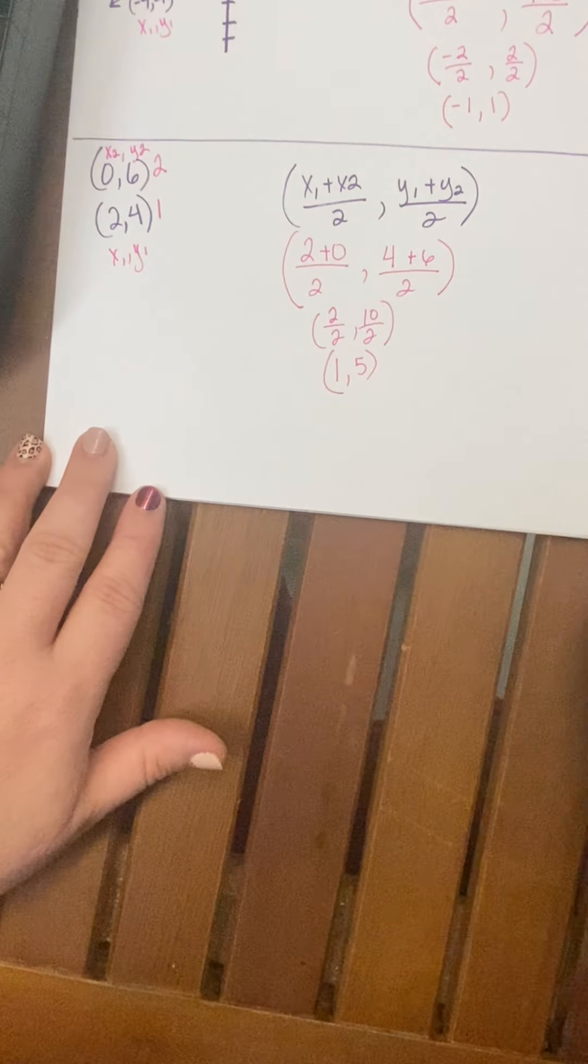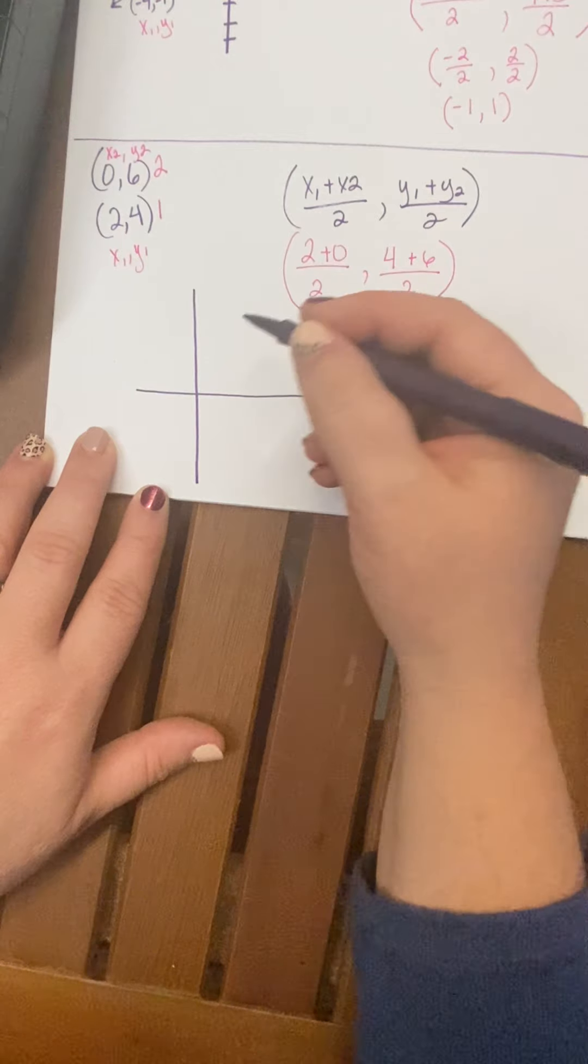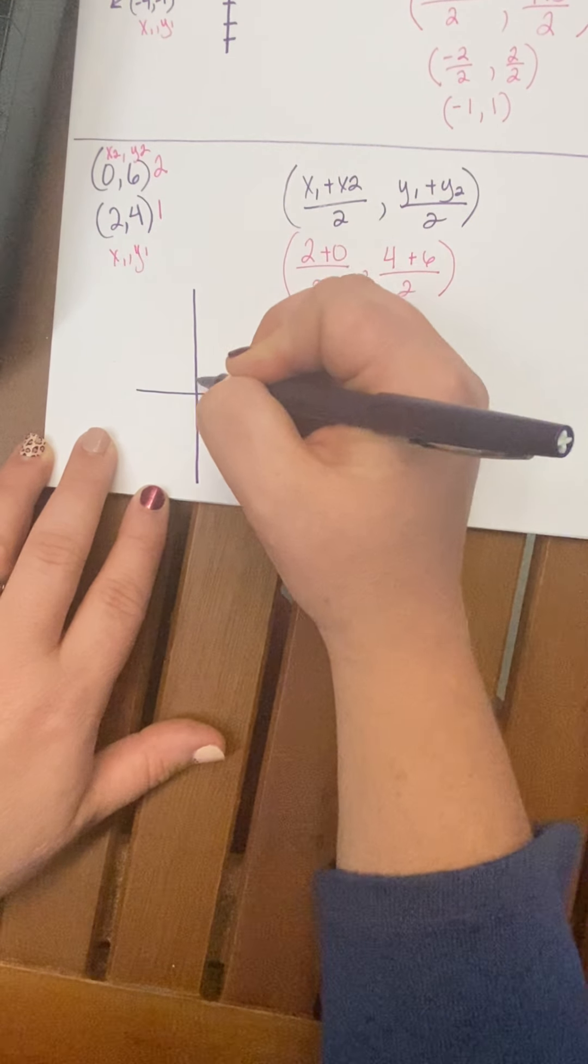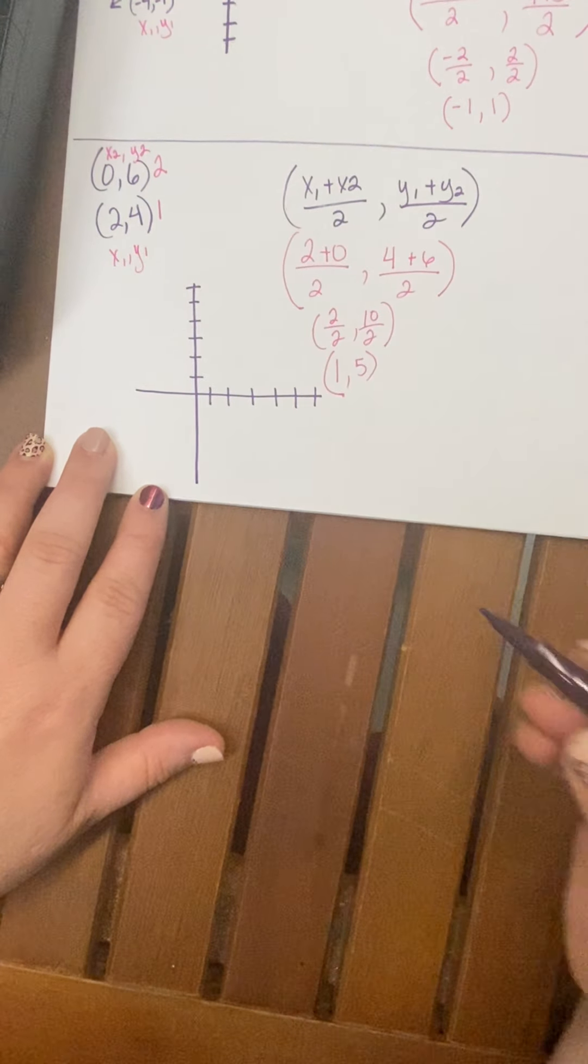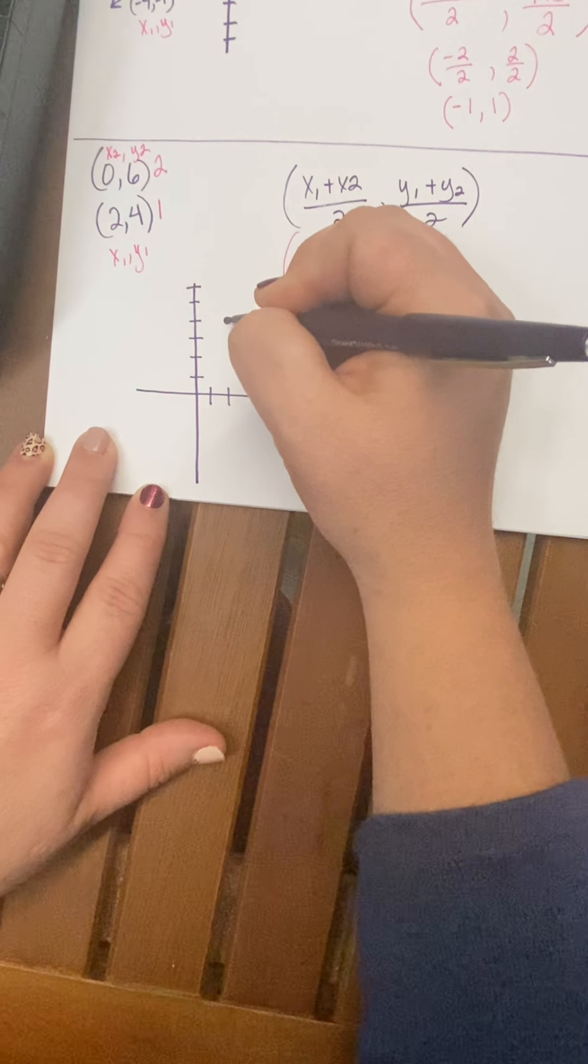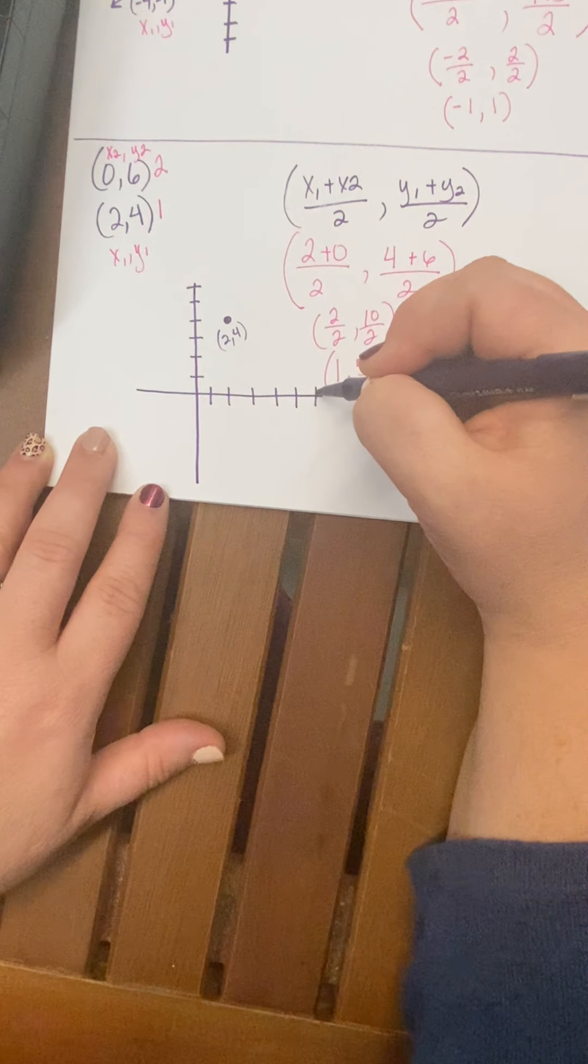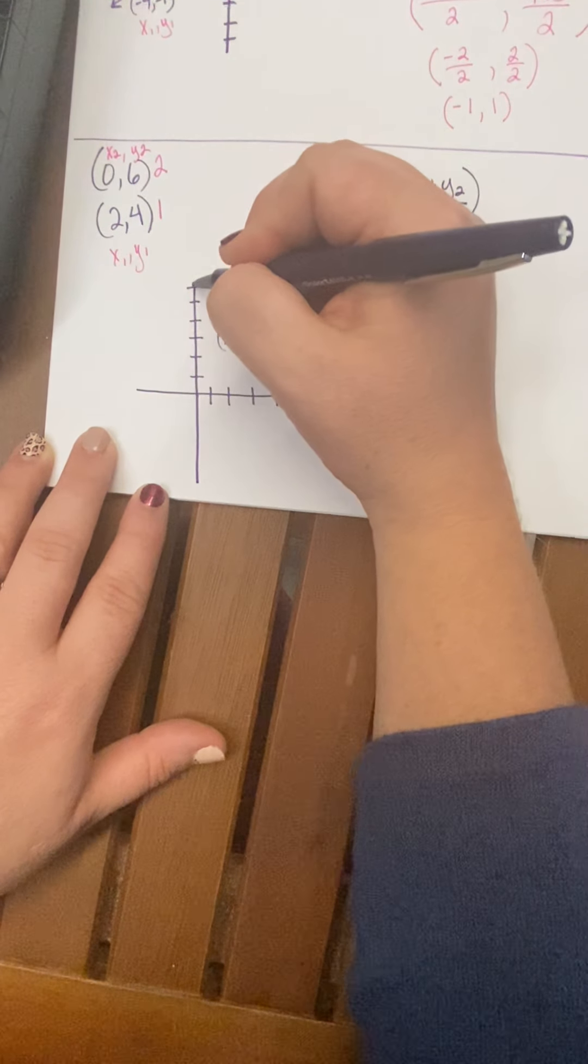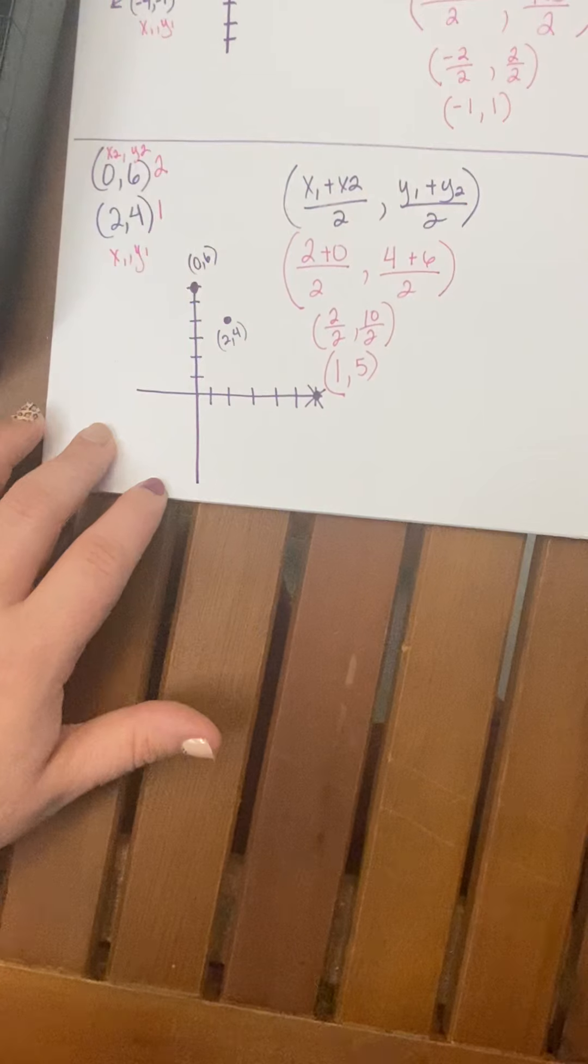So if I were to draw this, let me just go ahead and draw it out for you. Let's draw this like this. And basically, I only need this first quadrant. 1, 2, 3, 4, 5, 6. 1, 2, 3, 4, 5, 6. My first point is 2, 4. And my second point is 0, 6. Oh nope, that's wrong. Nope, nope, nope. 0, 6. There we go. You got it right now, Porter. 0, 6.